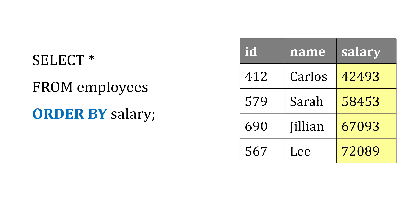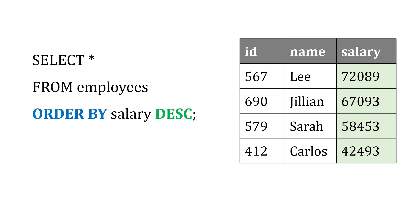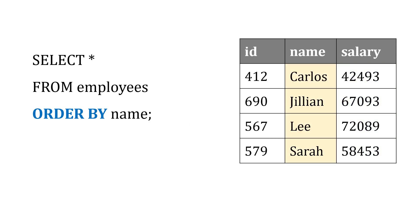We could change that by adding DESC at the end, so it's descending — from the highest salary to the lowest salary in descending order. We can also order by text, so maybe order by name, and it's going to give us the names from A to Z.